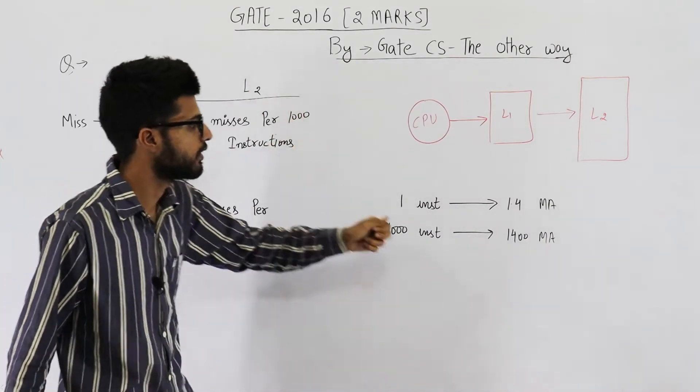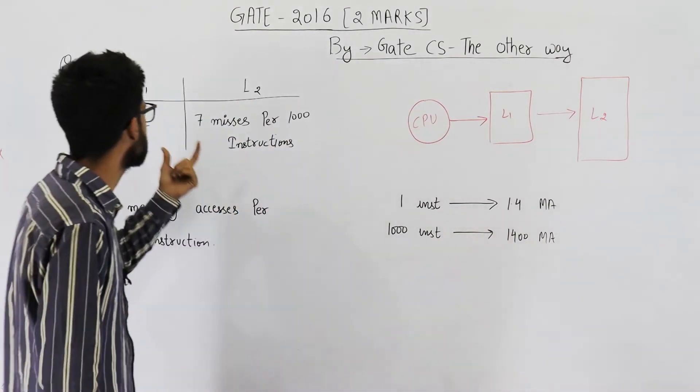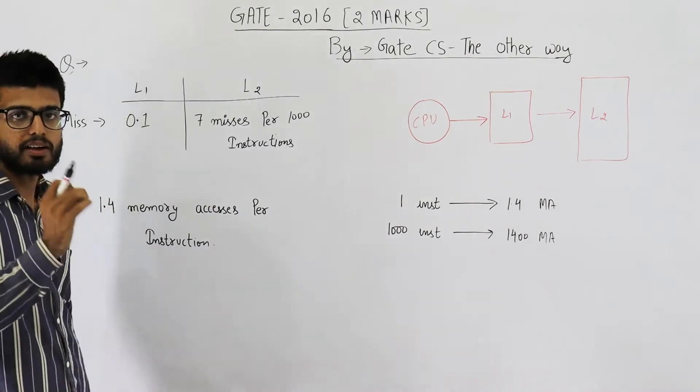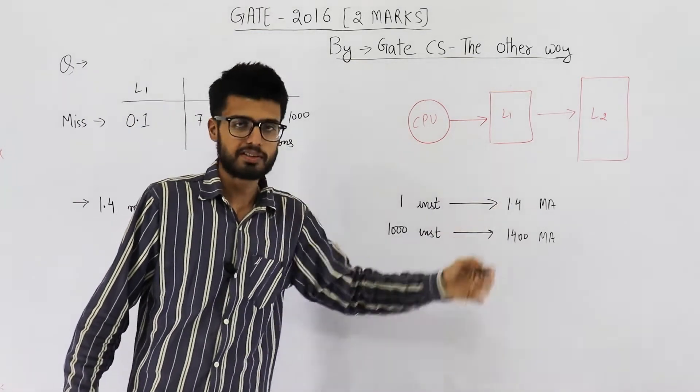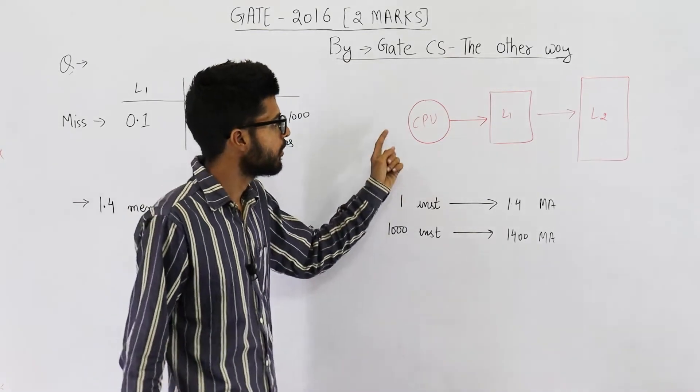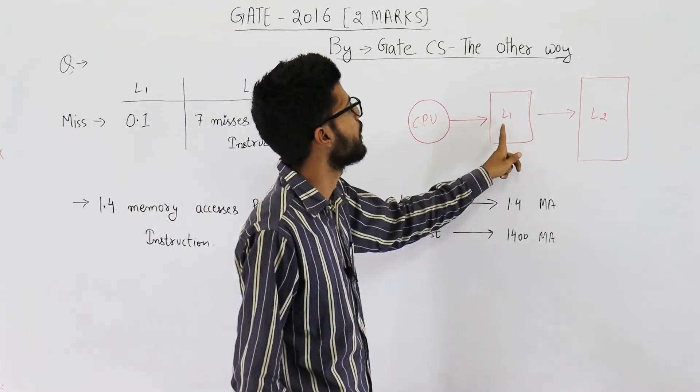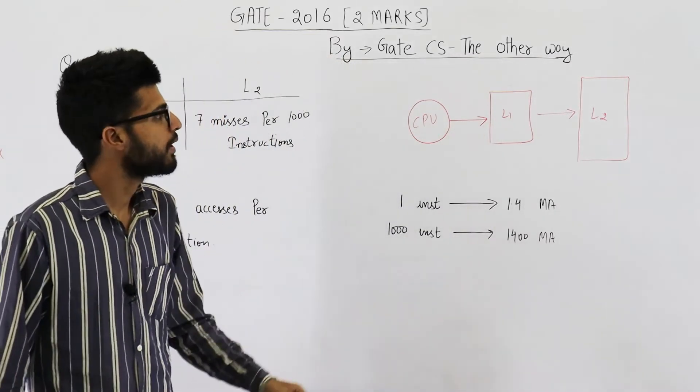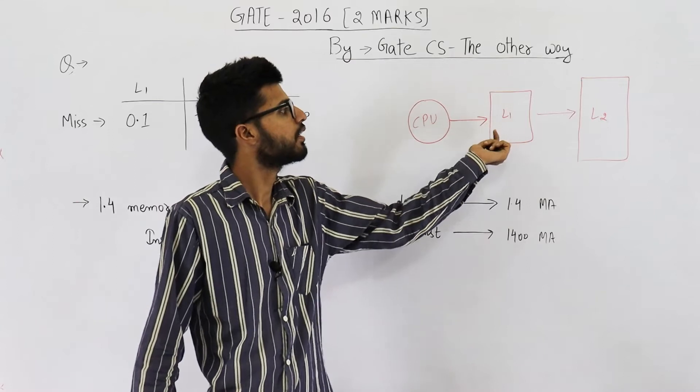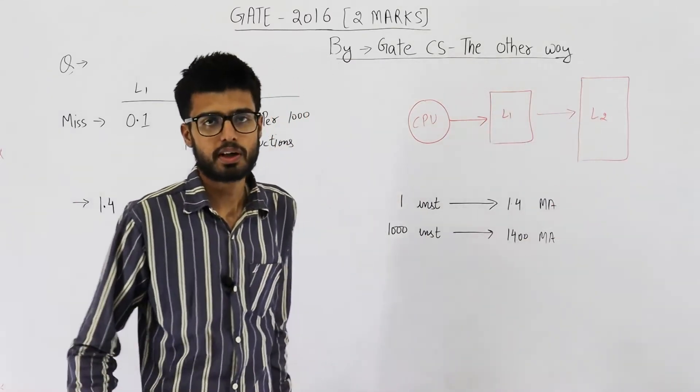But this is not for level 2. These 1400 accesses will be for level 1 or the very first level, the level which is closest to CPU. Because CPU will always ask from L1. That means 1400 times will access L1. Now it depends on miss rate of L1 that how many times it will go for L2.